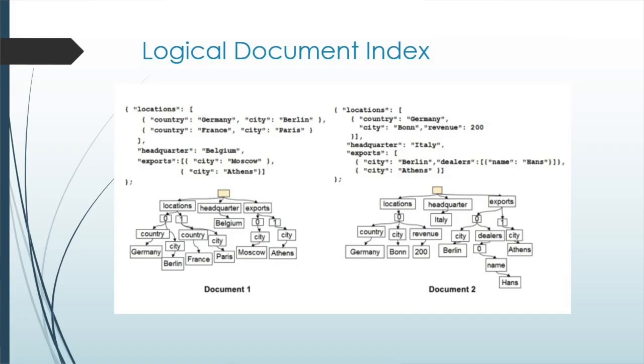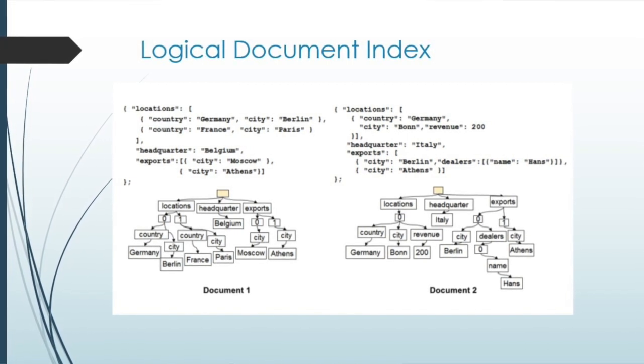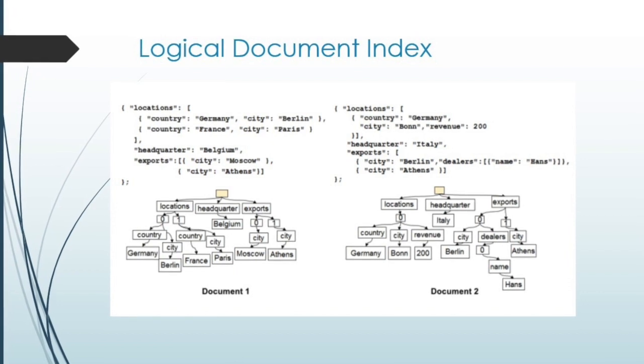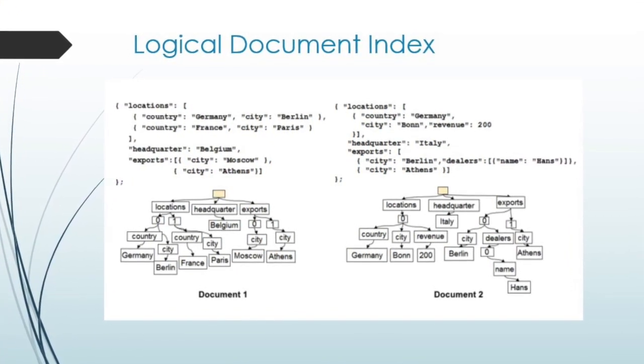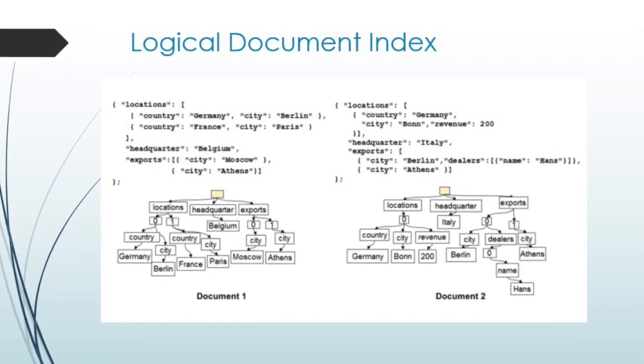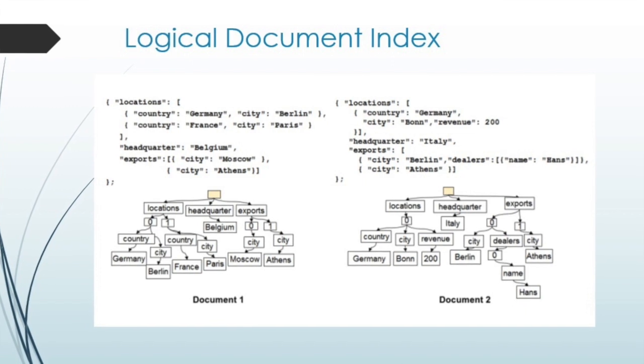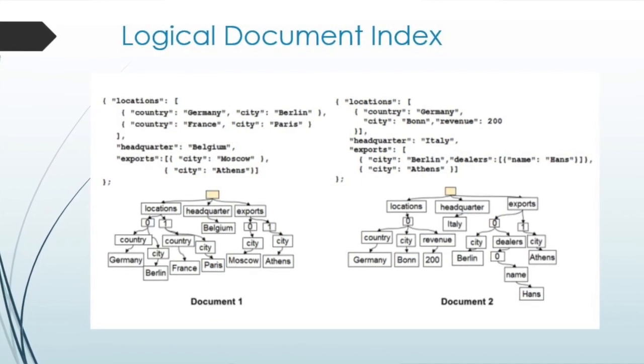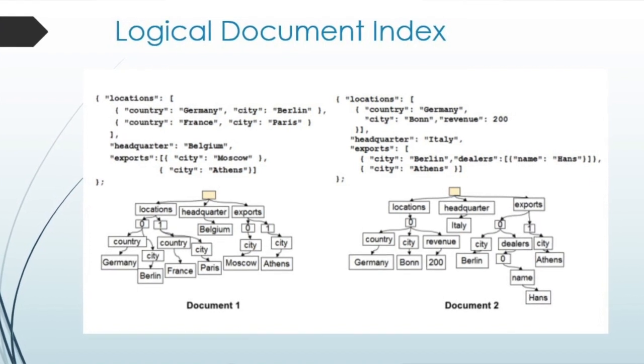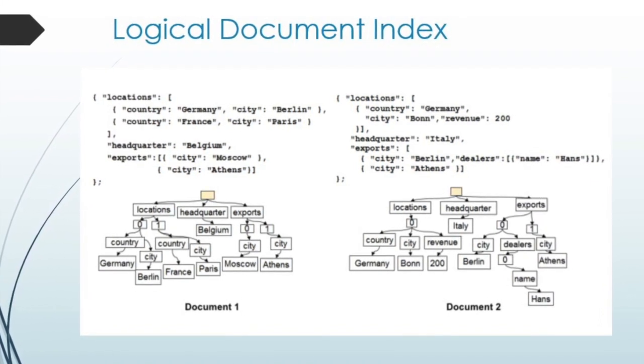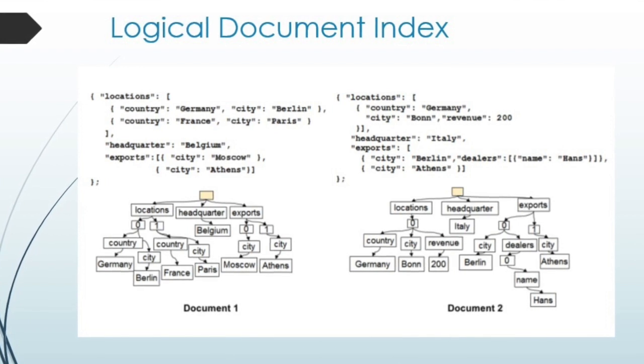Does that make sense? So we see there that actually the structure of the data, i.e. the JSON attributes, and the values are all stored logically in one construct. This is very different to B-Tree indexing, where the structure of the data is defined and hardened as metadata. And it's only the values that are indexed.